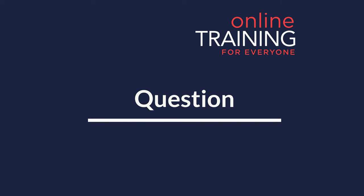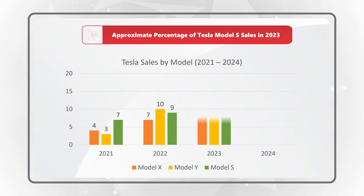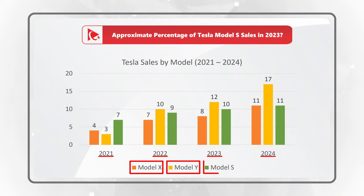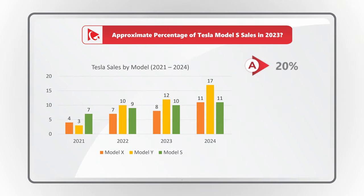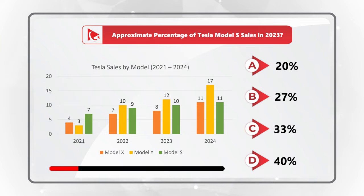Here is a very interesting question where you need to calculate the percentage of Tesla Model S sales in 2023. You are presented with a bar chart showing sales for 2021, 2022, 2023, and 2024. Each section has sales for Model X, Model Y, and Model S. Based on the information presented, you need to determine which number is correct out of four choices: Choice A, 20%; Choice B, 27%; Choice C, 33%; and Choice D, 40%. Give yourself a little bit of time to come up with the solution.